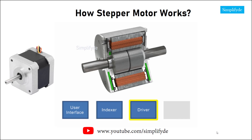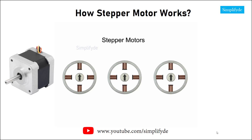The driver then takes the data from the indexer and provides current pulses to the motor. The number of steps the motor turns is equal to the number of pulses transmitted to the driver. The stepper motor is a brushless electric motor that converts pulses into mechanical shaft rotation. Each pulse moves the shaft through a fixed angle defined by the multiple toothed electromagnets arranged around a gear-shaped rotor. Stepper motors have three step modes of operation that include full, half, and microstepping.